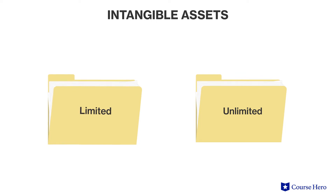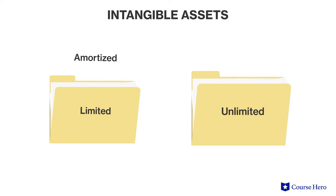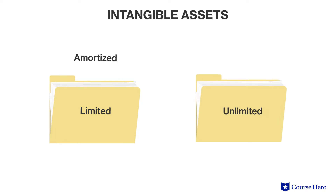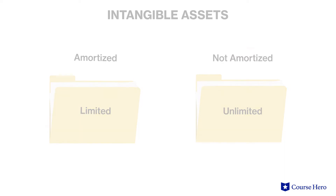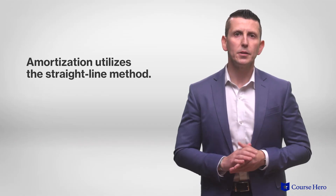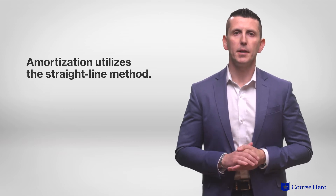Intangible assets with a limited life should be amortized over their useful life. Intangible assets with an indefinite life, such as goodwill, should not be amortized at all. When it comes to amortization, there is only one method: the straight-line method. This means that computing amortization simply involves dividing the cost of the intangible asset by its useful life.